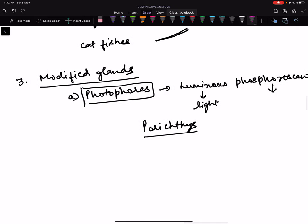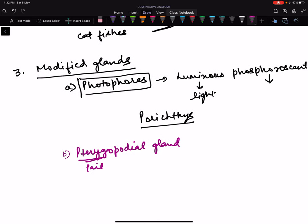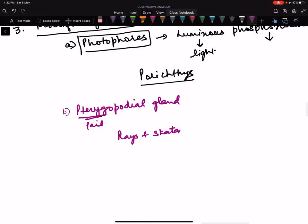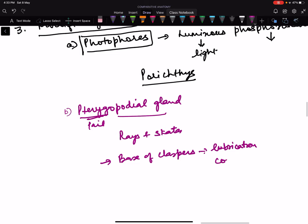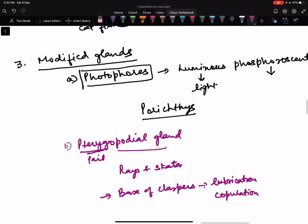Next, if you see modified glands apart from photophores, is pterygopodial gland. Pterygo means tail or you can say lower end. Pterygopodial glands are found in a group of fishes - rays and skates. Where are they present? They are present at the base of claspers. Claspers are reproductive organs. This pterygopodial gland provides lubrication to these organs for copulation. So this is how we have multicellular glands modified into photophores and pterygopodial glands in fishes.